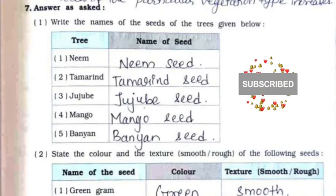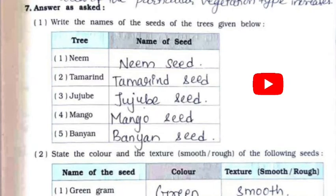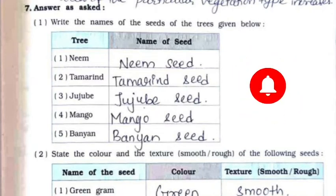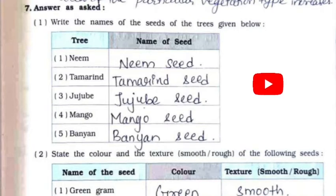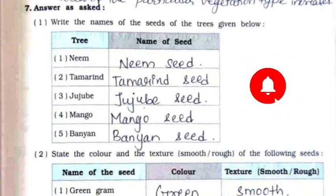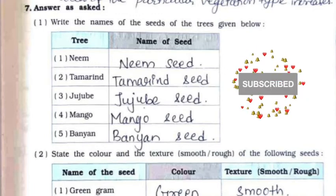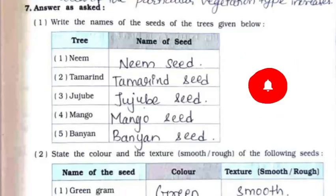Now we'll continue with question number seven. First: write the names of the seeds of the trees given below. Neem — neem seed; tamarind — tamarind seed; jujube — jujube seed; mango — mango seed; banyan — banyan seed.